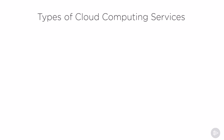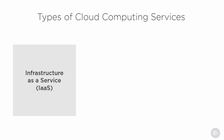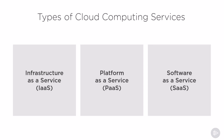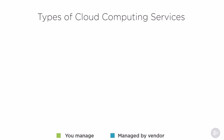There are multiple types of cloud computing services, but the three main ones are Infrastructure as a Service, Platform as a Service, and Software as a Service. What really differs between those cloud computing services is how much you manage versus how much the cloud vendor manages.